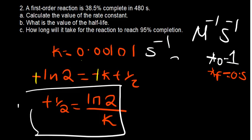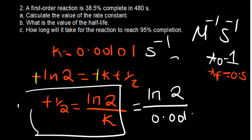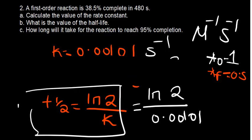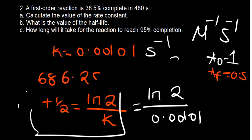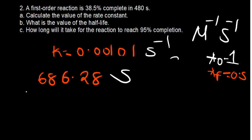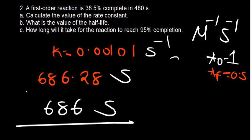Using t₁/₂ = ln(2)/K with K = 0.00101 s⁻¹: t₁/₂ = ln(2) / 0.00101 = 0.693 / 0.00101 ≈ 686 seconds. For the time to reach 95% completion, starting at 100%, the final remaining concentration is 5%. Substituting: ln(5/100) = −0.00101 × t, so ln(0.05) / (−0.00101) ≈ 2966 seconds.